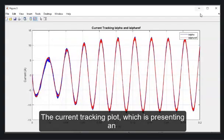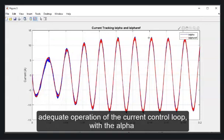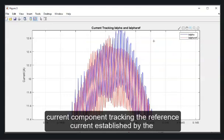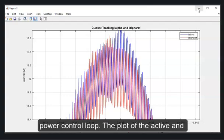The current tracking plot, which is presenting an adequate operation of the current control loop, with the alpha current component tracking the reference current established by the power control loop.